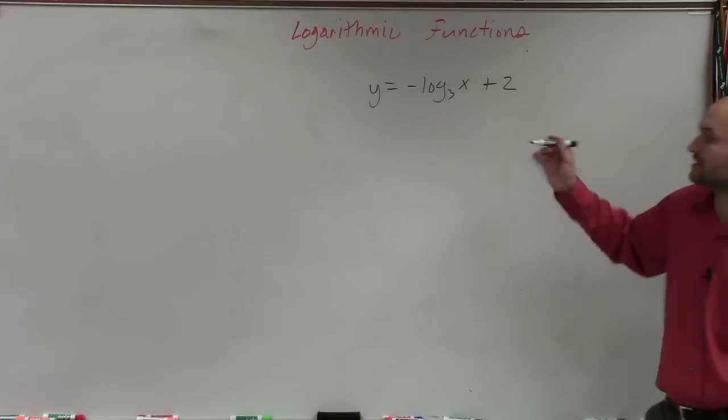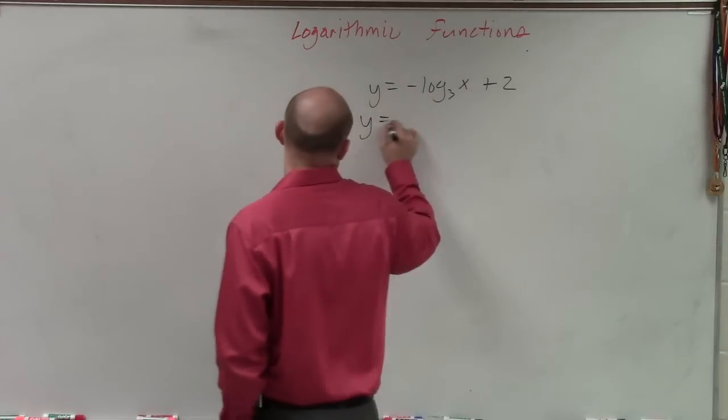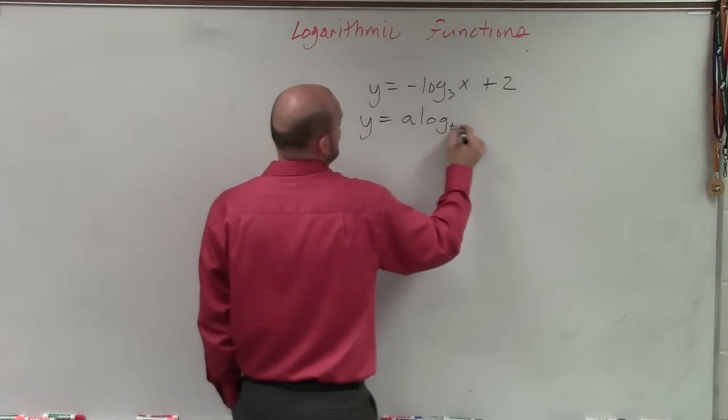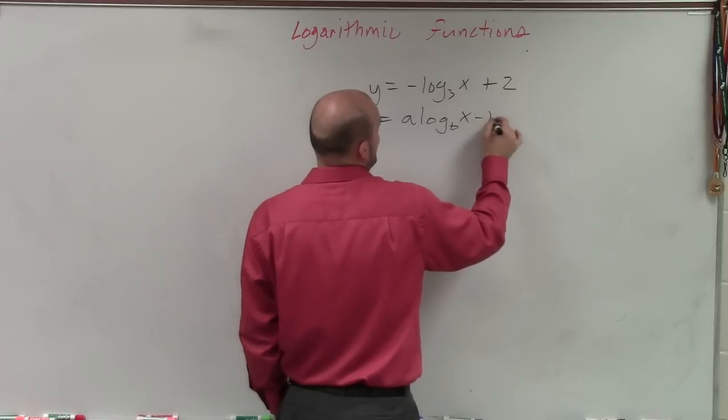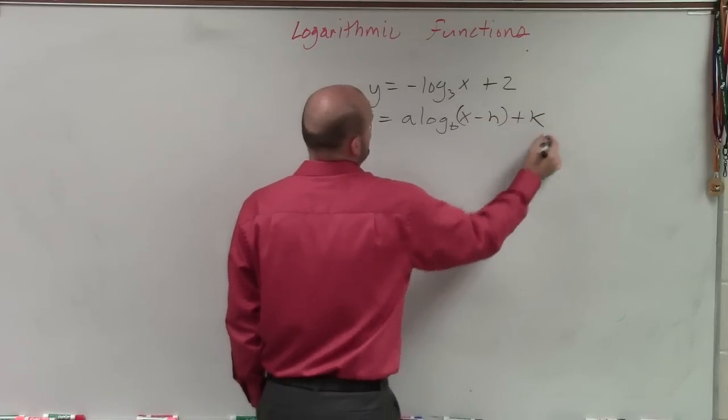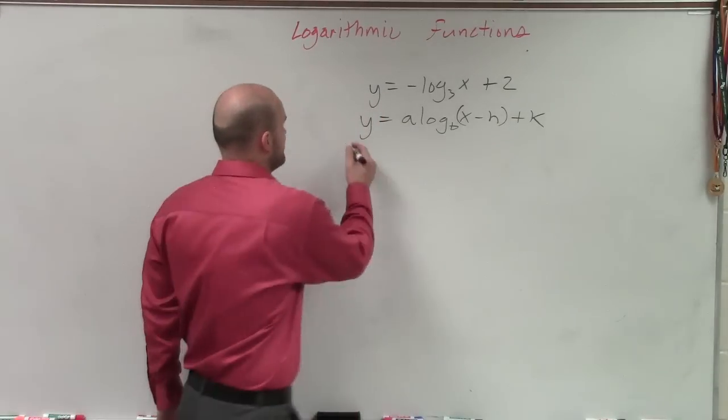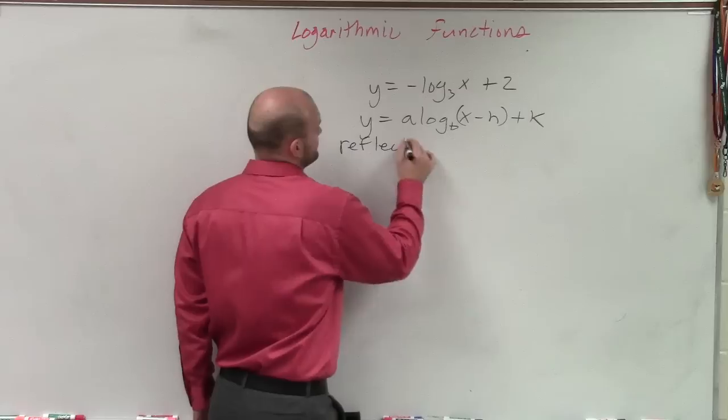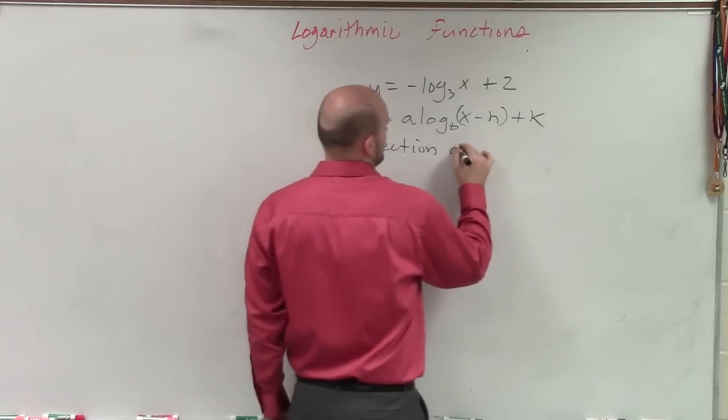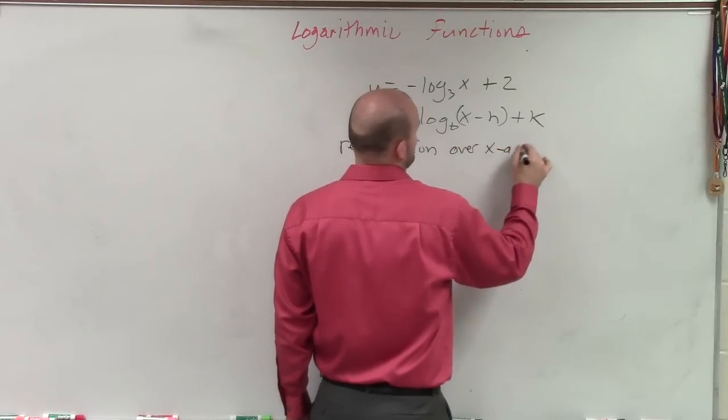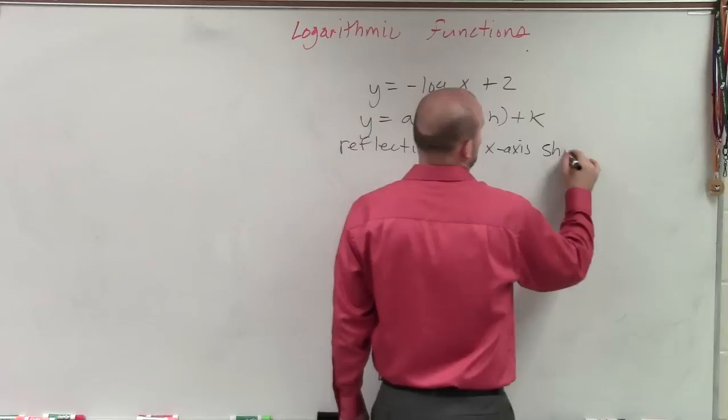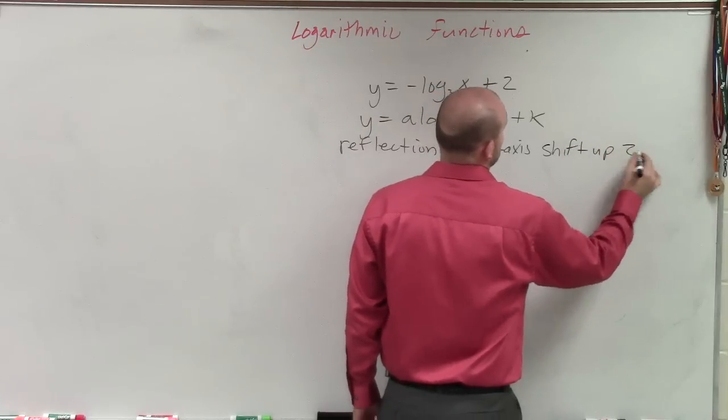Now, automatically, you guys can look at this and go back through your transformations: y equals a log base b of x minus h plus k. From looking at our general forms of our transformations, we know that our a is negative. So therefore, we're going to have a reflection over our x-axis.